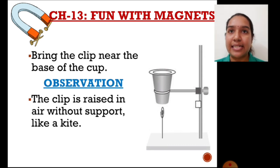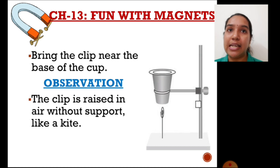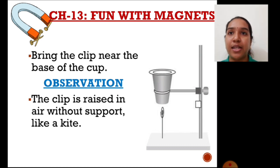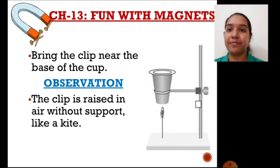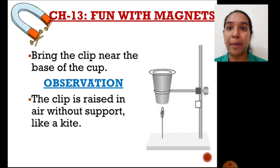Bring the clip or the safety pin near to the base of the cup, as you can see in the image. Immediately, what you will observe is that the clip will be in a raised position in air without any support — it resembles a kite flying. That is because the magnet in the paper cup is attracting the safety pin or the paper clip towards it.